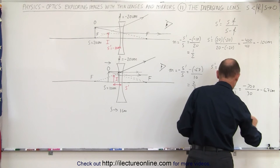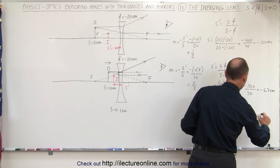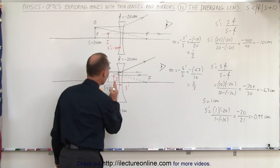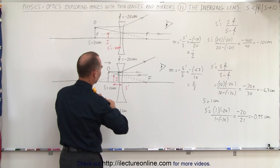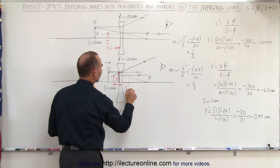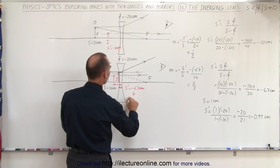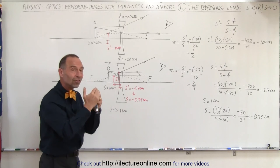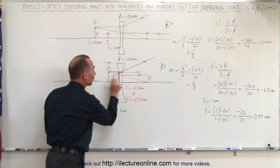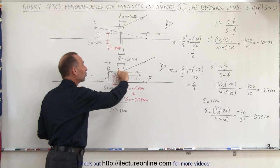That equals minus 20 divided by 21, which equals minus 0.95 centimeters. So as the object comes within one centimeter of the lens, the image will be at minus 0.95 centimeters — just inside of the object. The image distance has moved from minus 6.7 centimeters to minus 0.95 centimeters. In the limit as the object reaches the lens, the image will be just inside of the object, getting closer and closer to the lens, until the image reaches the lens as well and the height of the image equals the height of the object.